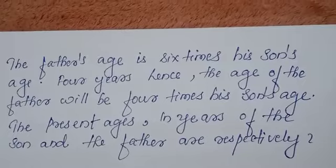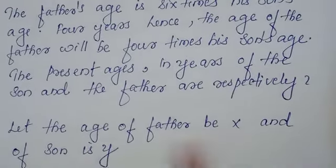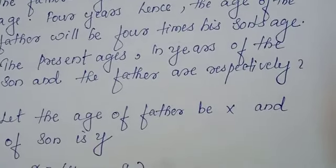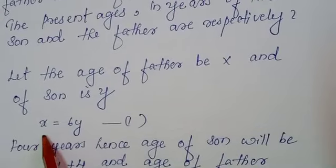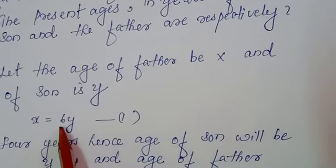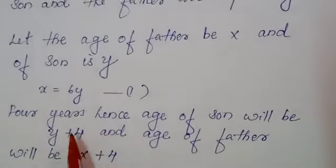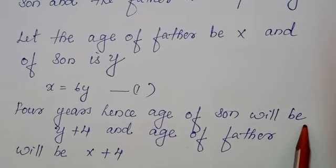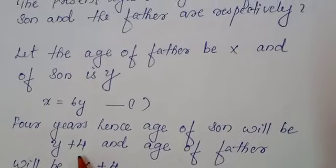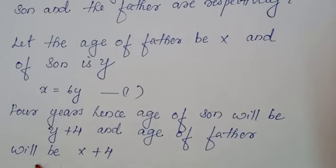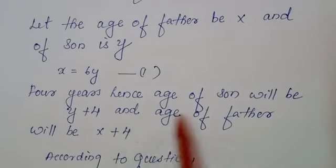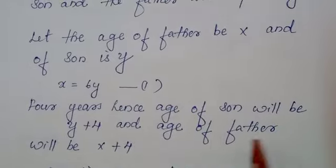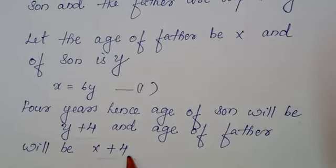According to the given situation, let the age of the father be X and the son is Y. Then, they are given 6 times his father's age is 6 times his son's age. So, X equals, this is father's age equals 6 times his son's age means 6 into Y. That means 6Y. This is equation number 1. Then, according to the statement, other given statement is 4 years hence the age of son will be 4 years. So, it will be Y plus 4 and the age of the father will be X plus 4. These 2 situations.